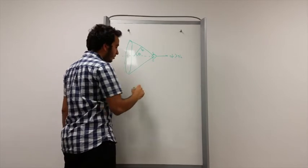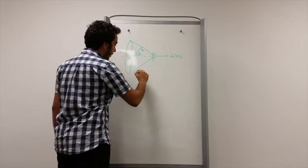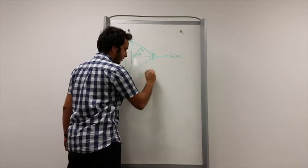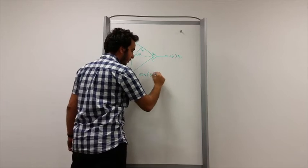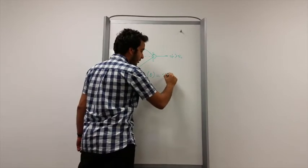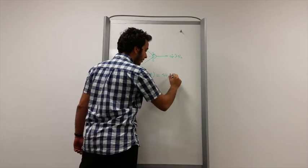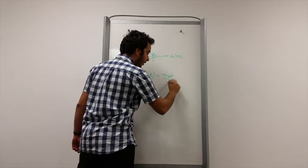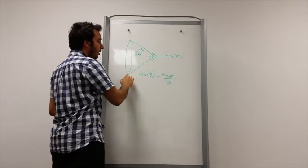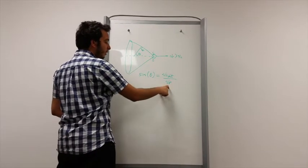The equations will be sine of theta equals the V of light, the velocity of light, over the velocity of the particle. So, at given angles, we can know the velocity of the particle.